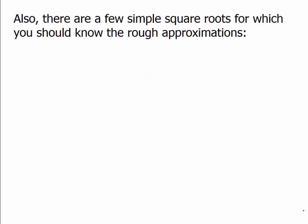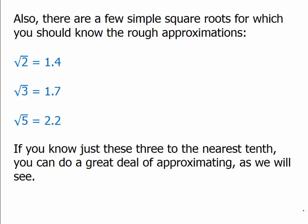There are a few simple square roots for which you should know rough approximations — these are the three big ones. Square root of 2 is approximately 1.4. Square root of 3 is approximately 1.7. Square root of 5 is approximately 2.2. Just know them to the nearest tenth — these are decimals that go on forever, but if you remember them to that approximation, you can do a great deal of approximating.